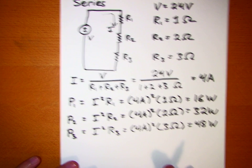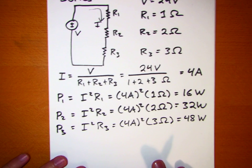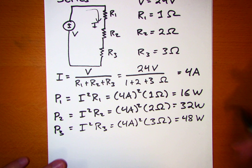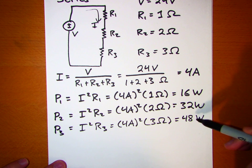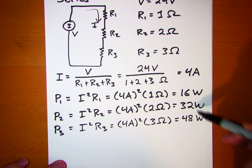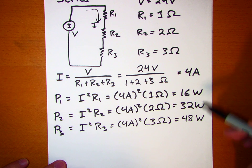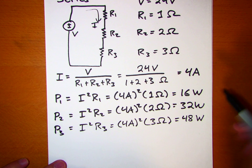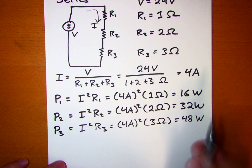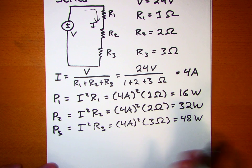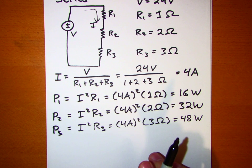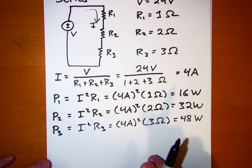As you can see, compared to the parallel circuit, the powers dissipated in each resistor are actually much less than the power dissipated in the comparable parallel circuit that we just looked at.